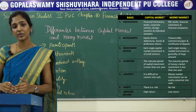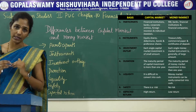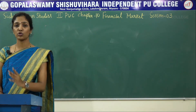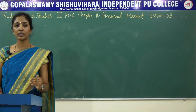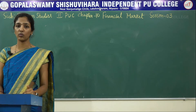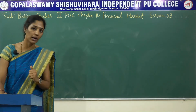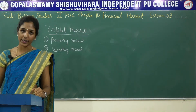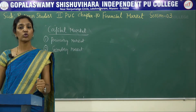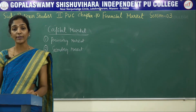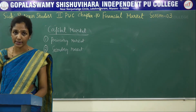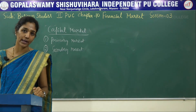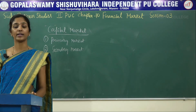So these are all the differences between capital market and money market. Now, this capital market has two components. The first one is primary market and the second one is secondary market. Primary market is also known as new issue market.